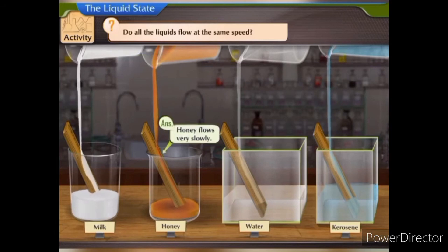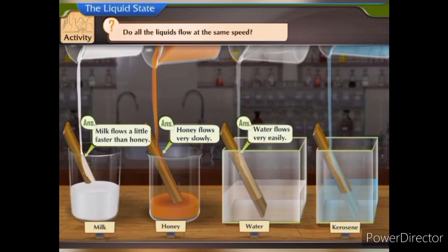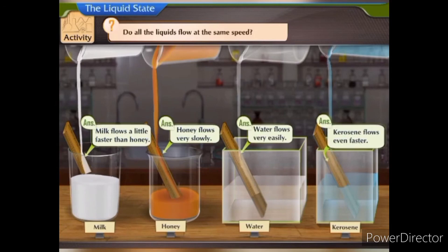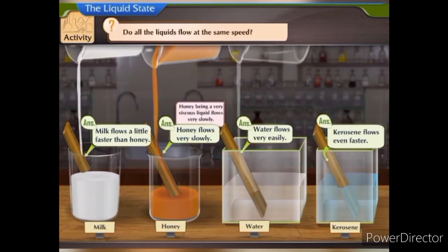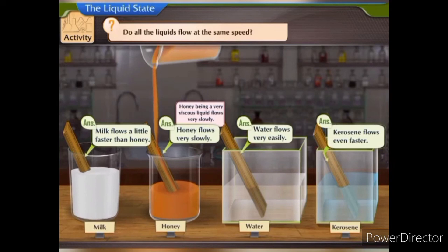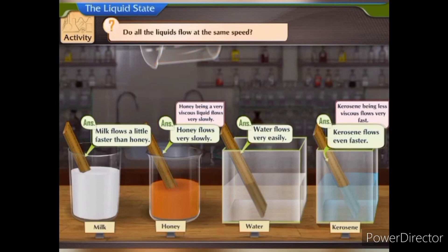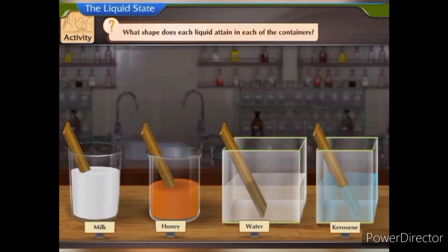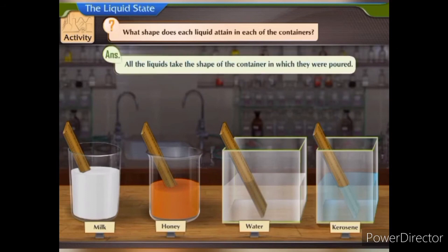Honey flows very slowly. Milk flows a little faster than honey. Water flows very easily. Kerosene flows even faster. Honey, being a very viscous liquid, flows very slowly, and kerosene, being less viscous, flows very fast. What shape does each liquid attain in each container? All the liquids take the shape of the container in which they were poured.